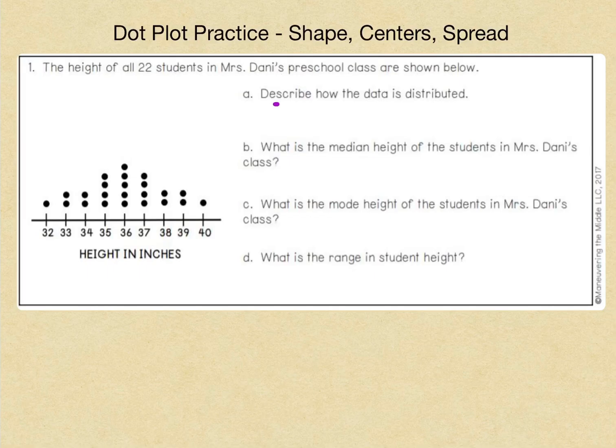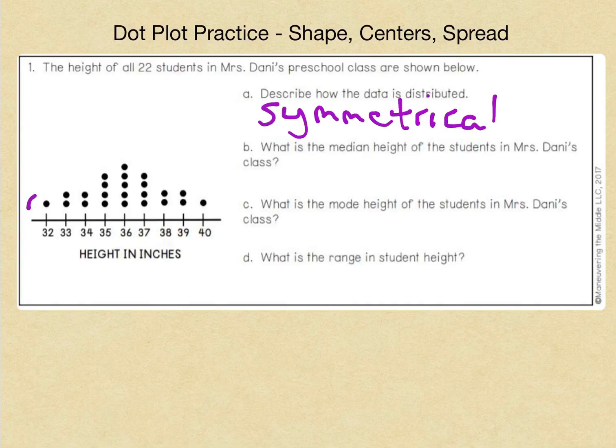Okay, the data is distributed. It is symmetrical in this situation. Symmetrical. And you could have drawn your curve over the top to see, and you could have also drawn your line down the center to see that it is symmetrical. Okay, now let's go on to B.